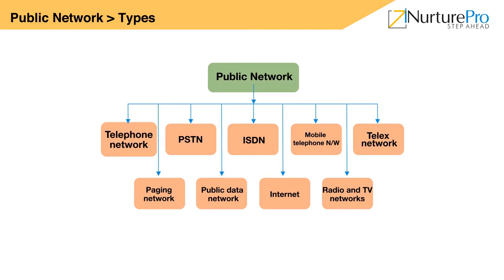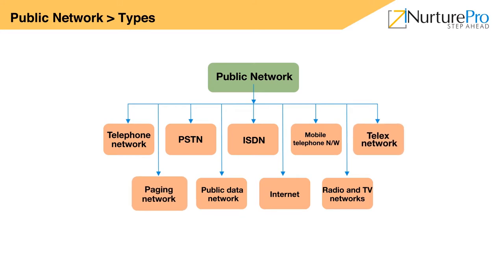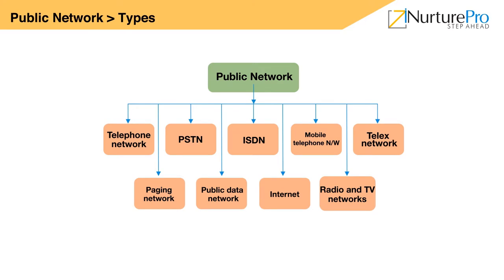Now let's look at the types of public networks. Telephone networks, also called telephony or fixed networks, include PSTN (Public Switched Telephone Network) and ISDN (Integrated Services Digital Network). There is also the Mobile Telephone Network, Telex Network, and Paging Network. Further types include Public Data Network, Internet, Radio, and Television Networks. Let's study each one of them in detail.